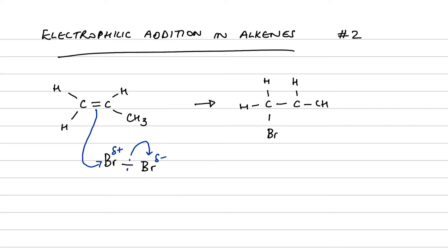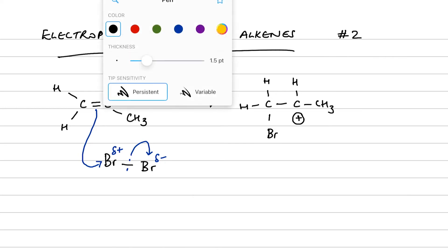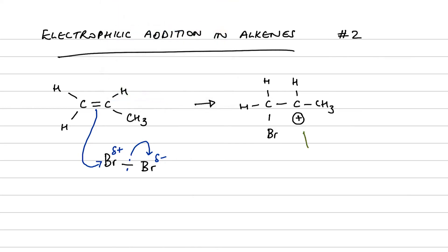H, H, Br, H, CH3. Now once again, the positive charge, the carbocation, is far more likely to be on this carbon atom here because it has an alkyl group bonded to it, and that alkyl group is going to push electron density towards the positively charged carbon atom and help stabilize the carbocation.